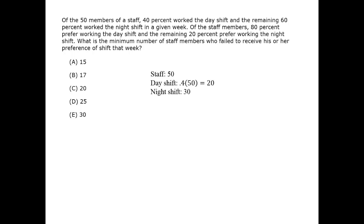We want to know the minimum number of people who didn't get their preferences. So let's calculate the preferences of the staff. Again, we have 50 staff members. The number that prefer the day shift is 40, and the number that prefer the night shift is 10.